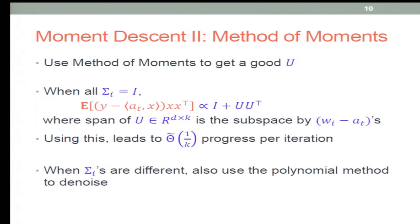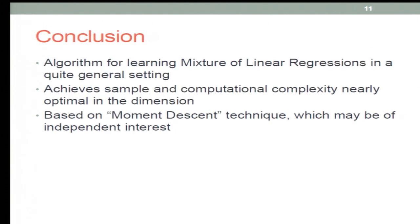For the second part, we don't have time to talk about that. It's just proving some local bounds. So the conclusion is that they show an algorithm for learning mixture of linear regression under that model and achieve near optimal sample complexity and computational complexity in terms of dimension dependence. The moment descent technology can be of independent interest. Thank you.